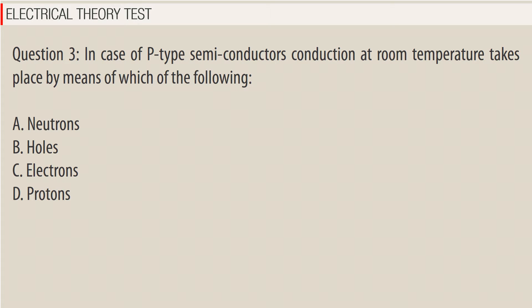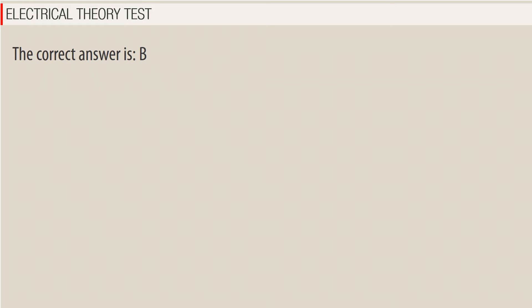Question 3. In case of P-type semiconductors, conduction at room temperature takes place by means of which of the following? A. Neutrons. B. Holes. C. Electrons. D. Protons. The correct answer is B — Holes.